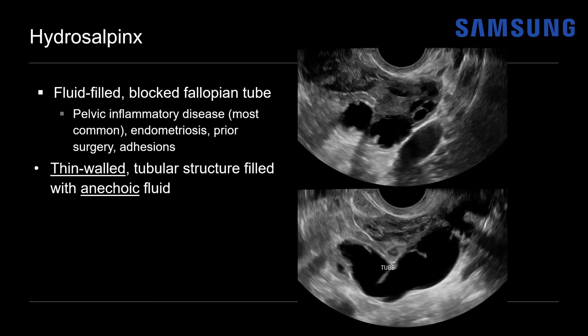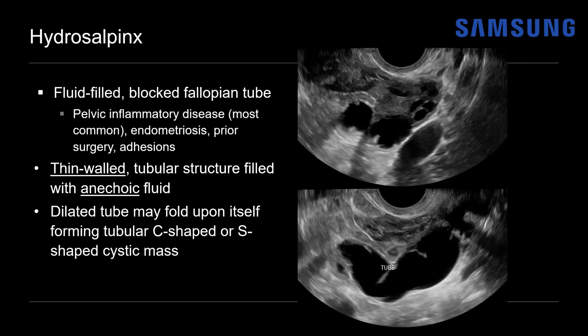On ultrasound, hydrosalpinx appears as a thin-walled tubular structure filled with anechoic or simple fluid. The dilated tube often folds upon itself, giving a c- or s-shaped configuration, which helps differentiate it from a cystic ovarian neoplasm, which is usually more ball-shaped. If septations are present, they'll be incomplete, as opposed to the complete septations typically seen in ovarian neoplasms or other multilocular collections.